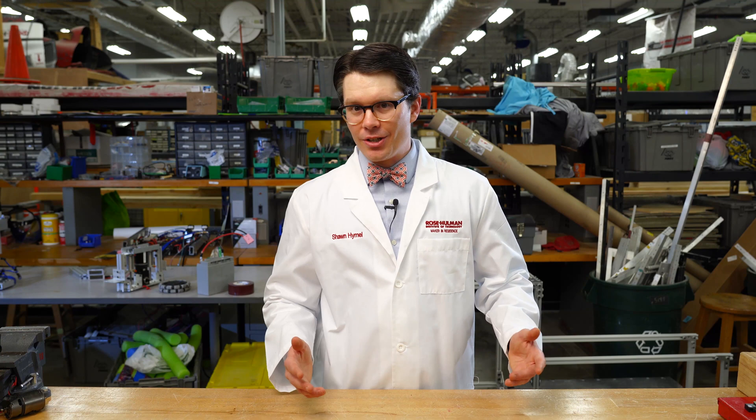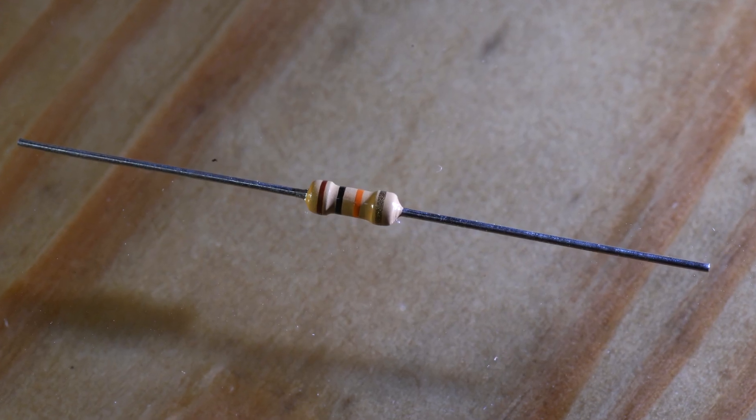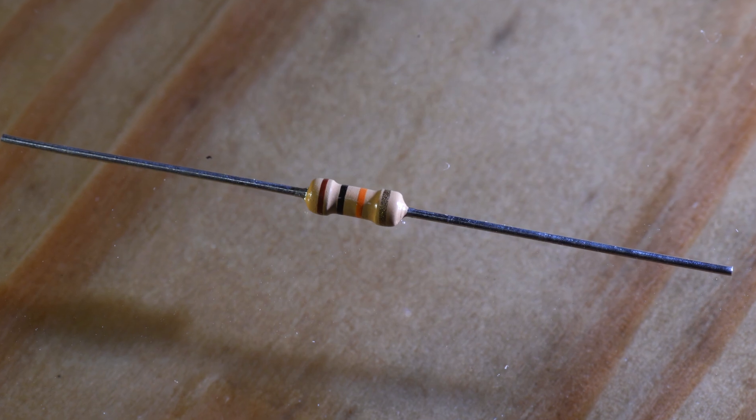But as engineers, we usually don't want things to explode on our users. That's generally frowned upon. So how do we protect these little things? We can restrict the current flowing through an LED by using a resistor.